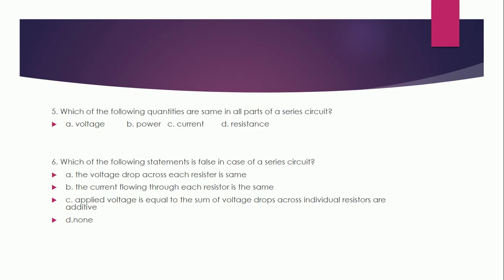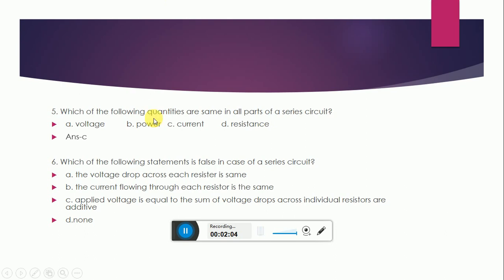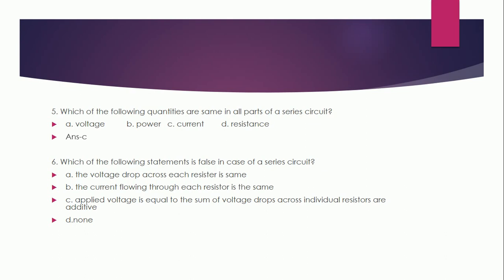Which of the following quantities are the same in all parts of a series circuit? A: voltage, B: power, C: current, D: resistance. The correct answer is C — current. Which of the following statements is false in the case of a series circuit? A: the voltage drop across each resistor is the same. B: the current flowing through each resistor is the same. C: applied voltage is equal to the sum of the voltage drops across individual resistors. The correct answer is A — the voltage drop across each resistor is the same.